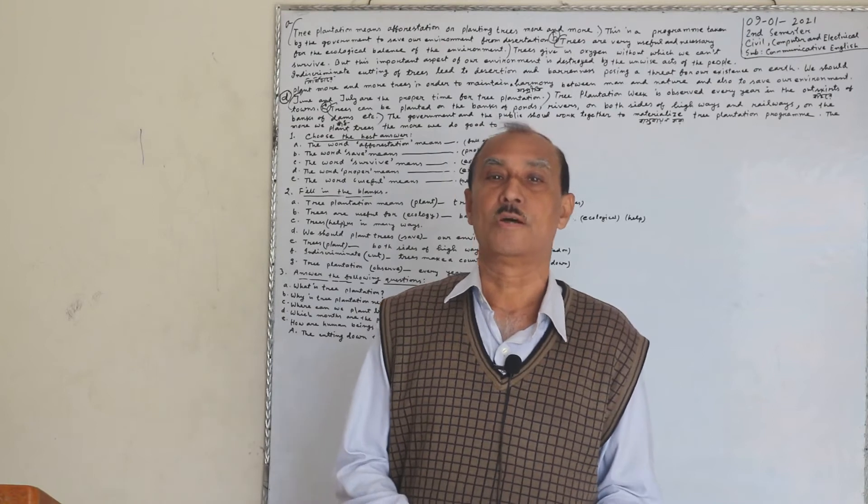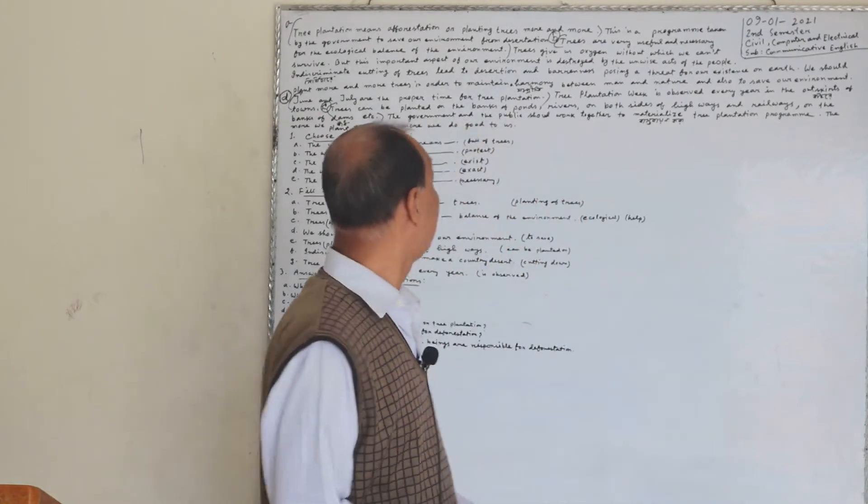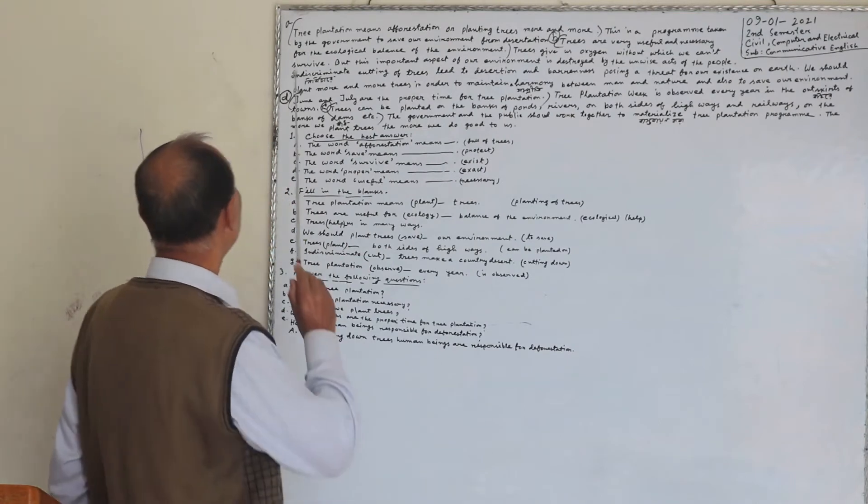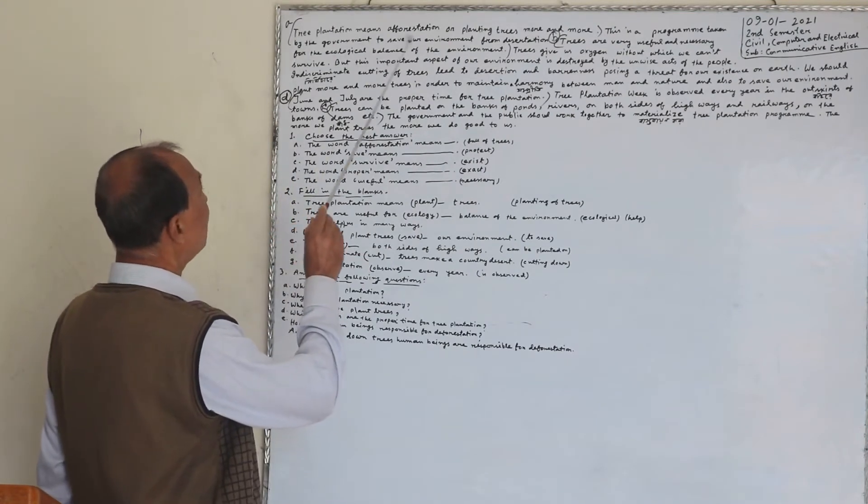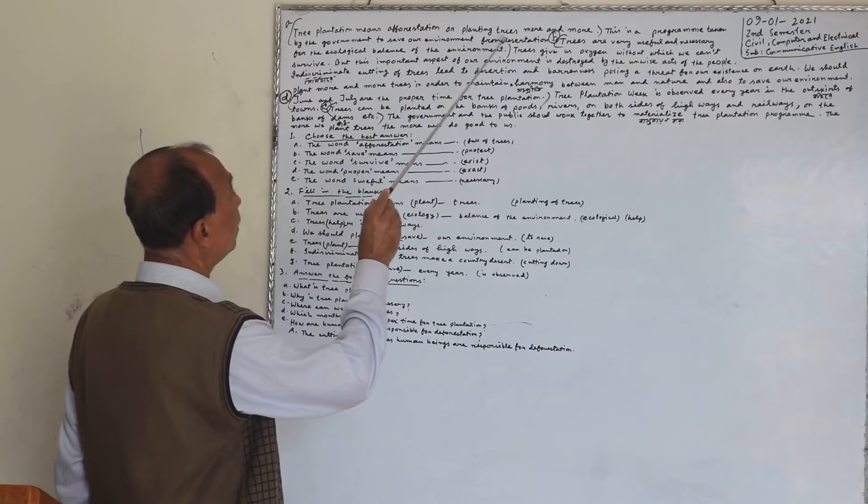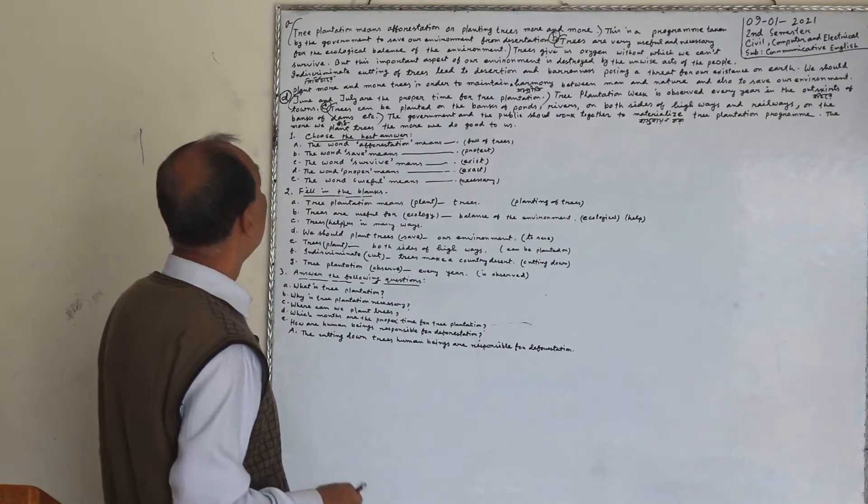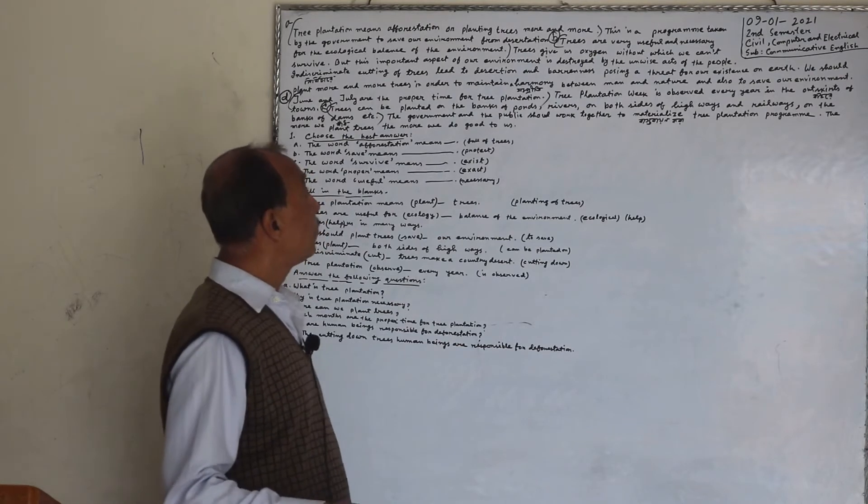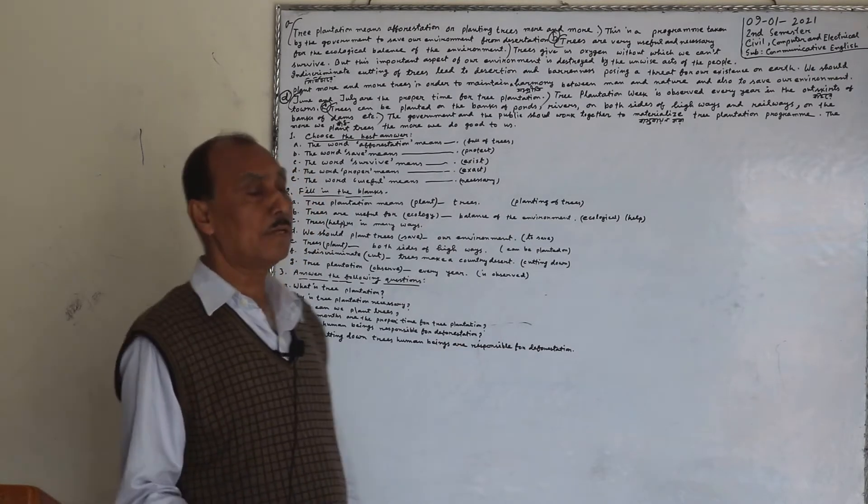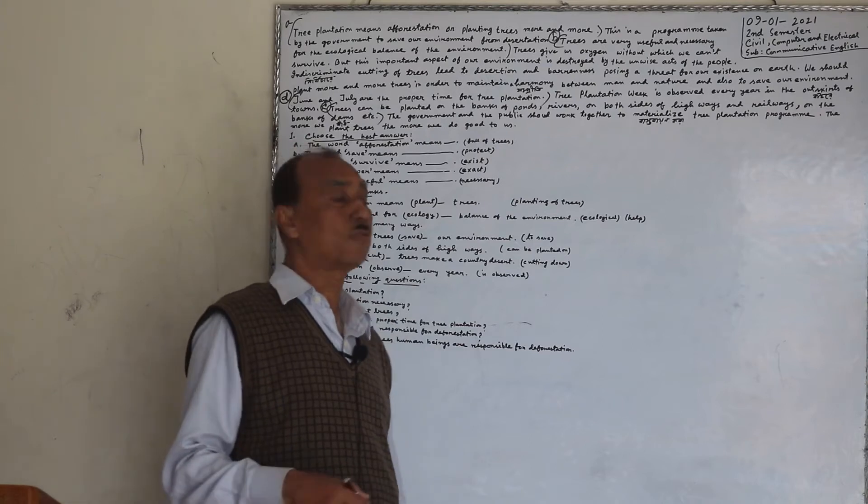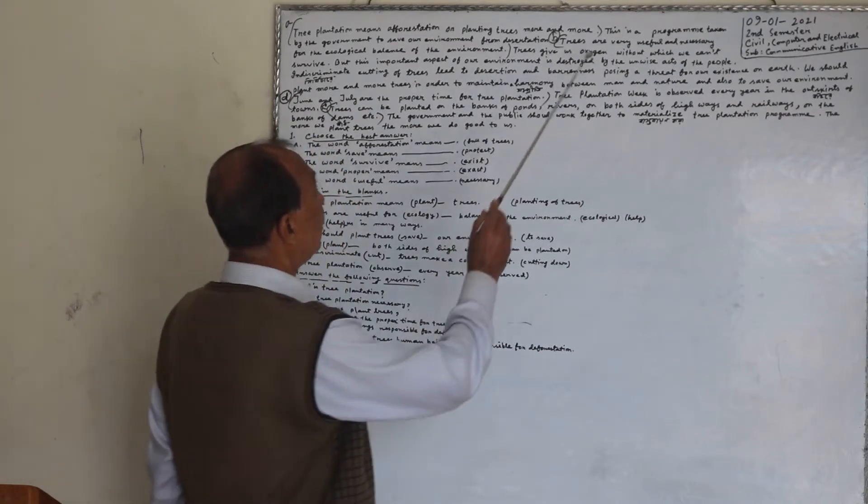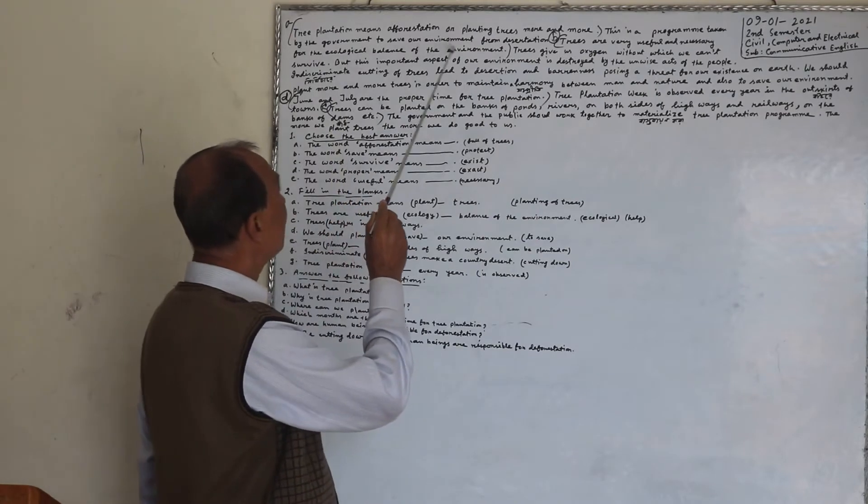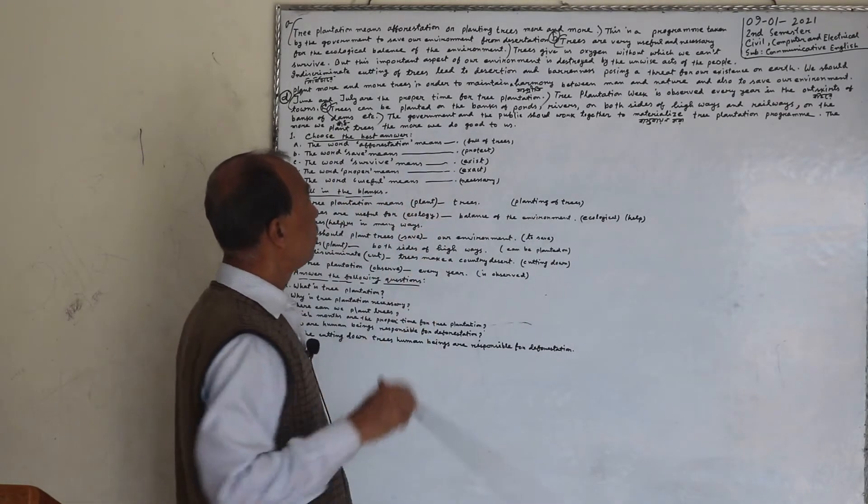In the second semester, I will be able to do this. Tree Plantation means, a forestation or planting trees more and more. This is a program taken by the government to save our environment from desertation.